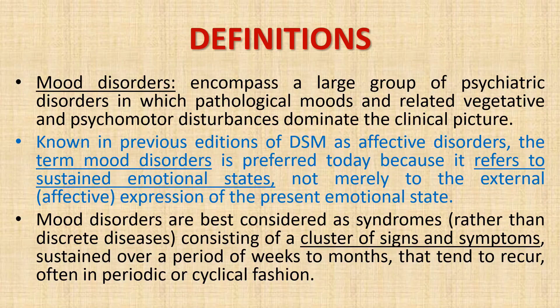Mood disorder encompasses a large group of psychiatric disorders in which pathological mood is the core feature — either elevated mood or depressed mood — along with other psychopathologies like psychomotor disturbances and impaired vegetative states such as impaired sleep and appetite. Previously DSM-IV defined it as affective disorders, since affect is the immediate expression of emotions. It was reconsidered as mood disorders because mood is a more sustained emotional state. It is considered a disorder rather than a discrete disease because of the cluster of signs and symptoms found in depressive or manic states.